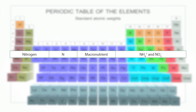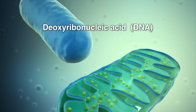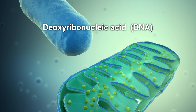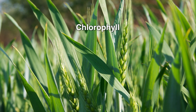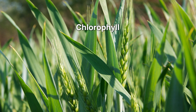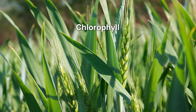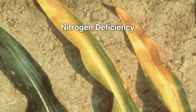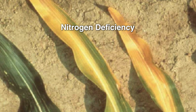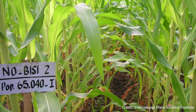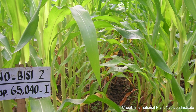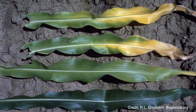Nitrogen is a key component of proteins, chlorophyll, and nucleic acids such as DNA. As part of the chlorophyll molecule, nitrogen is also essential for keeping leaves green and healthy. Therefore, the leaves of nitrogen-deficient plants are often yellow, especially older leaves, since plants will move nitrogen from old leaves to new leaves if they become nitrogen-deficient.